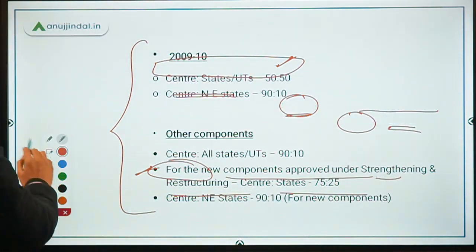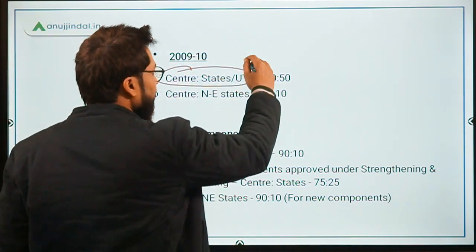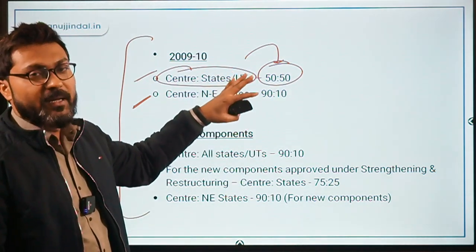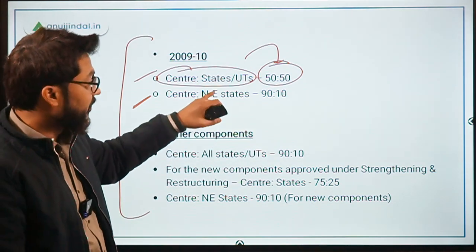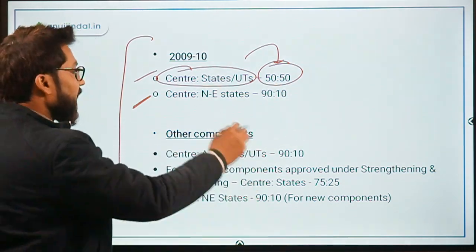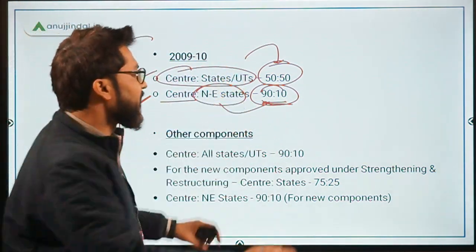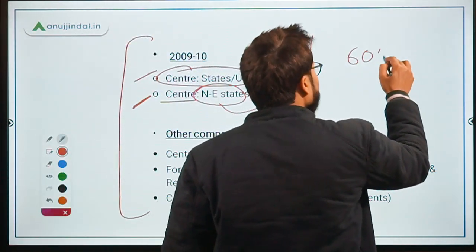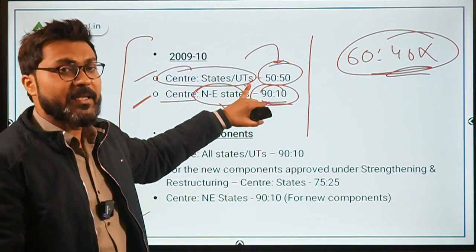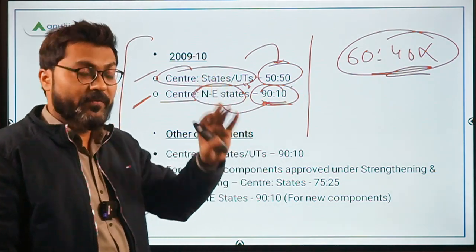After 2019, the funding pattern was converted into a fixed ratio. The ratio between center and states or UTs became 50:50 — 50% is provided by the central government and 50% by the state or corresponding UT. This is the current funding pattern. For northeastern states, however, the ratio is 90:10. Remember, it is not 60:40 — it is 50:50 for normal states and UTs, and 90:10 for northeastern states.